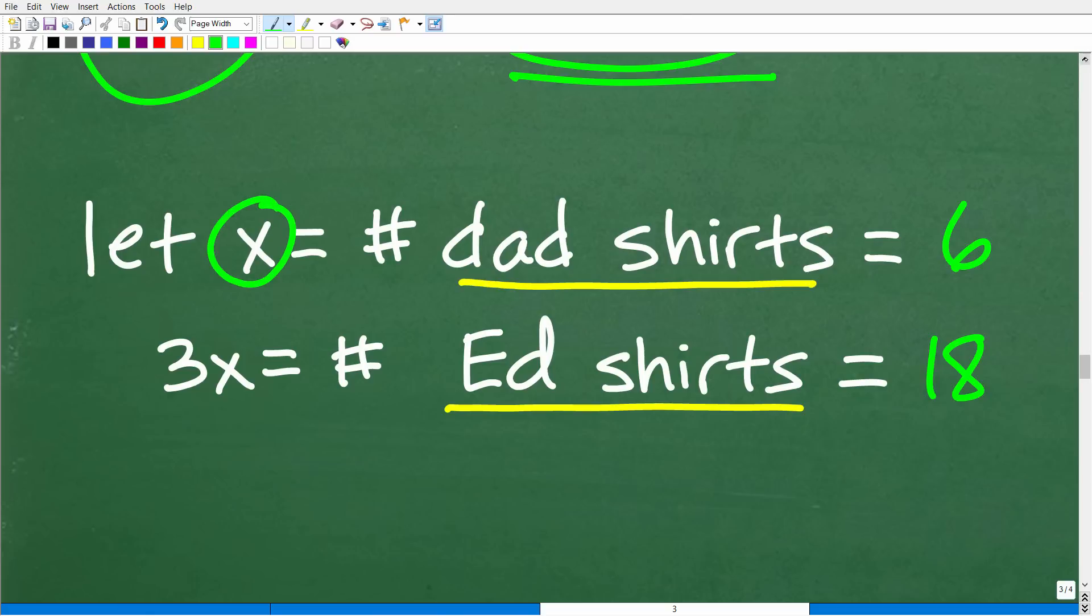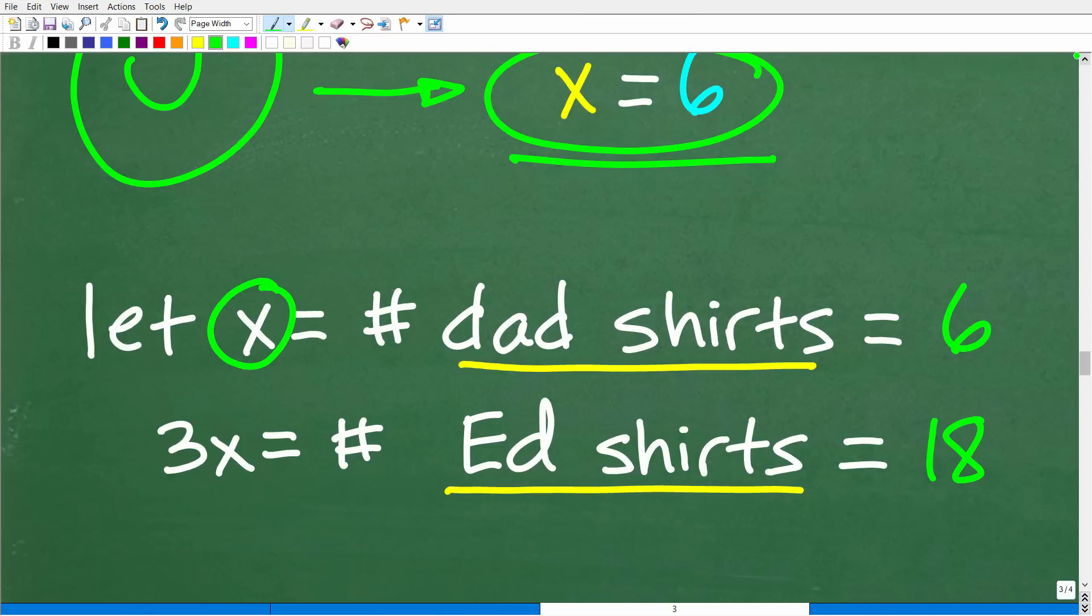So remember, X, we just solved for it. X is equal to 6. That's the number of shirts the dad has. So the dad has 6 shirts, and 3X represents the number of shirts Ed has. So that's going to be 3 times what X is, that is 6. So 3 times 6 is 18. All right, so Ed, again, has 3 times as many shirts as the dad. So 6 times 3 is 18. And if we add these up, we get to 24.